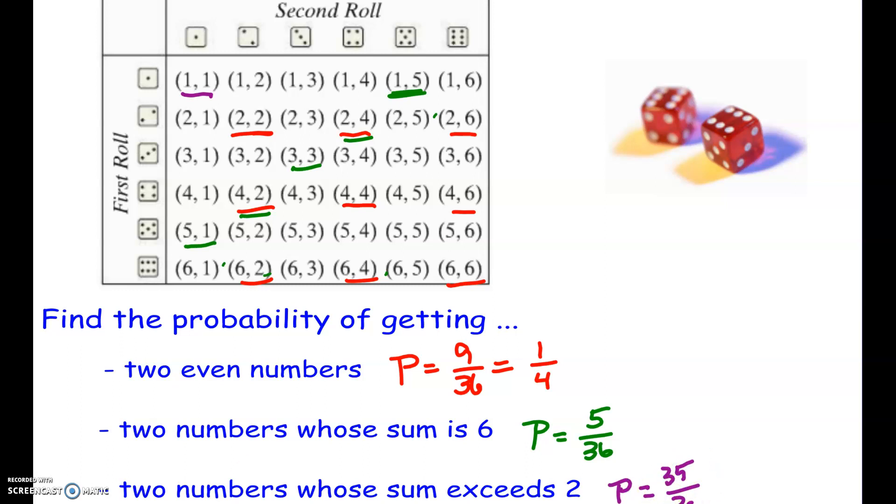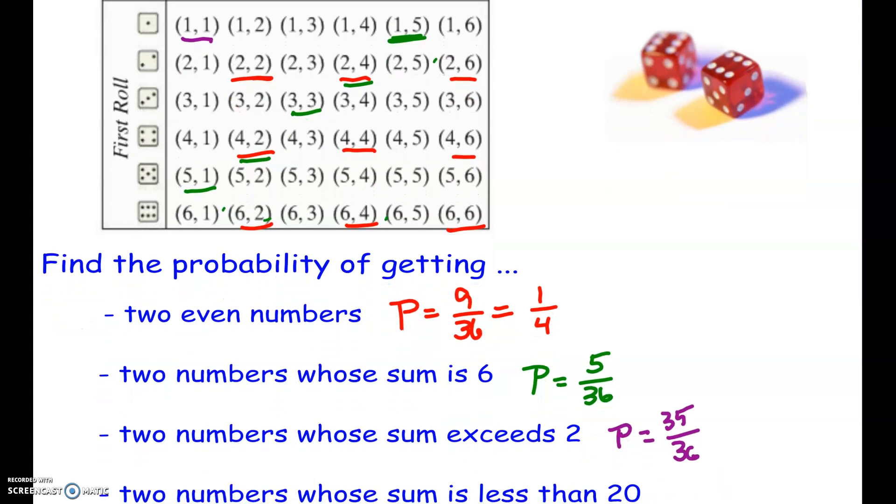Now this last one. So it's a little bit trickier. It says two numbers whose sum is less than 20. Go ahead and hit pause and see if you can identify that one. All right, so what'd you come up with? If I'm looking at this sample space, the biggest numbers we can get are 6 and 6, right? If I add 6 plus 6, that's 12. So everything is going to have a sum 12 or less. So this means it's going to be all of them. The probability is 36 out of 36 or 1 or 100%. Let me know if you have any questions.